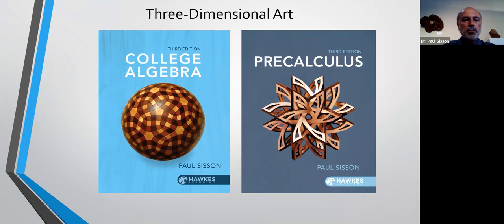I liked that so much that when it came time just recently — a couple months ago — to come up with covers for the third editions of my first two books, again I wanted something that was ideally a mathematical sculpture. This time we found two pieces by George W. Hart, a very prolific and well-known mathematical artist who is also one of the co-founders of the Museum of Mathematics in New York. We got permission to use photos of two of his pieces: the piece on the left is titled 'Roads Untaken' and the one on the right is 'Dragonflies.' George Hart does a very good job describing the math behind his work, which you can find at georgehart.com.